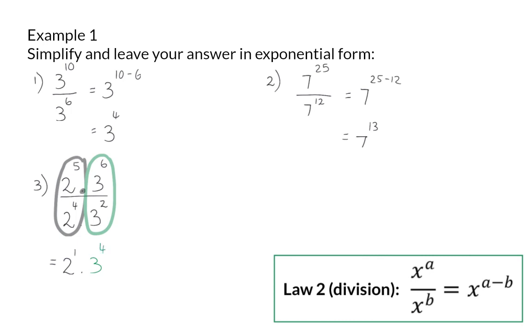The instruction is to leave your answer in exponential form. Here we now have two different bases, which means I cannot use the multiplication law to simplify further, so my final answer is 2 times 3 to the power of 4. In all three of these examples, there were more of the specific base number in the numerator than in the denominator. Let's now go and have a look what happens when there is more of the base number in the denominator.